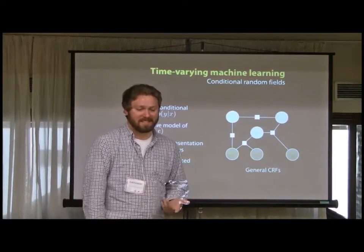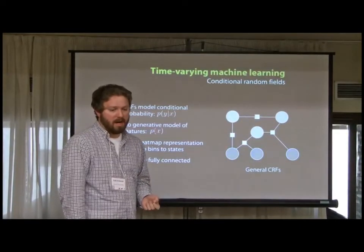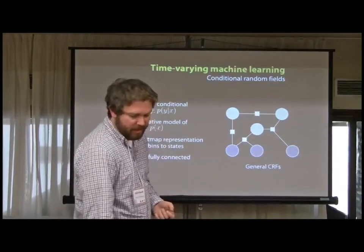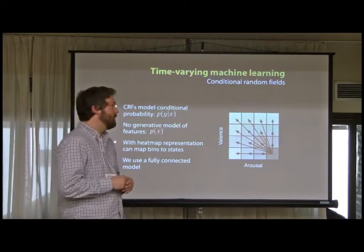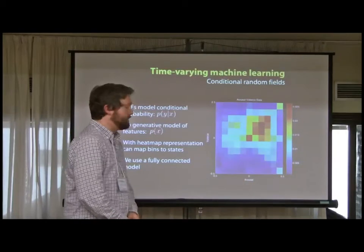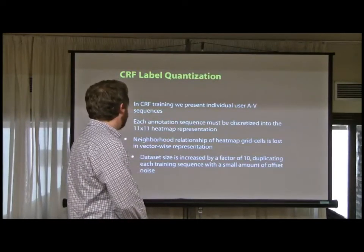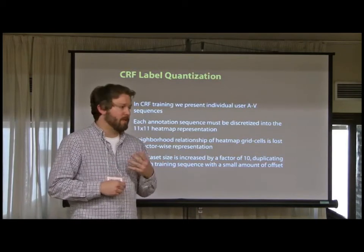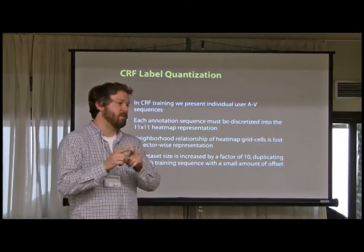The more sophisticated model we're looking at is conditional random fields. CRFs predict the probability of labels Y given a set of features X — there's no generative model of the features, it's really discriminative. What we do is use a heat map representation: we bin the AV space, and each bin represents a node in the model. You can think of the conditional probabilities in terms of HMM transition probabilities. Our actual heat map is 11 by 11. One of the issues that happens immediately is that the neighborhood relationship of the grid cells is lost when we assign class labels.